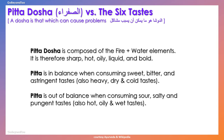The pitta dosha is composed of the fire and water elements. It is therefore sharp, hot, oily, liquid, and bold. Pitta is in balance when consuming sweet, bitter, and astringent tastes — also heavy, dry, and cold foods. Pitta is out of balance when consuming sour, salty, and pungent tastes, or hot, oily, and wet foods.